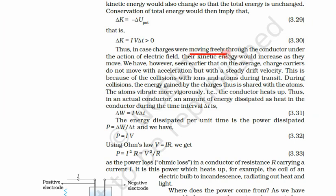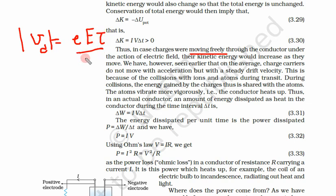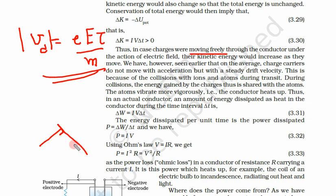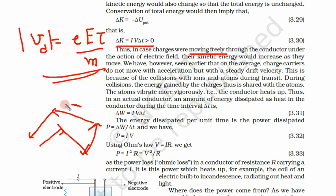When we calculated drift velocity, it came out to be a constant: v_drift = eEτ/m. It is not increasing. Why? Because every time an electron collides with an ion, it loses all its velocity and has to start again. Between successive collisions, we take an average velocity that is almost constant. The increase in kinetic energy does not show as an increase in velocity because of these collisions.